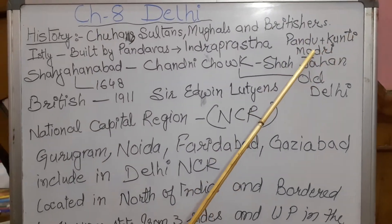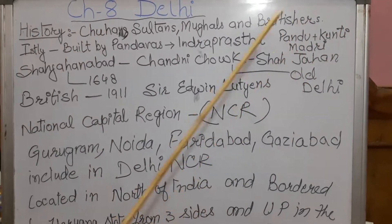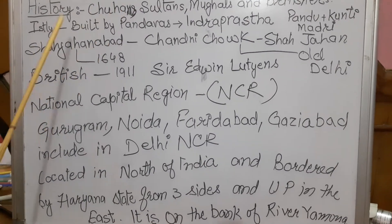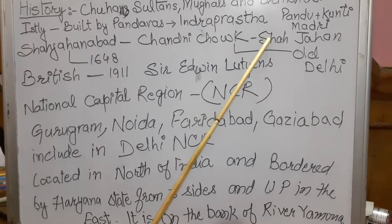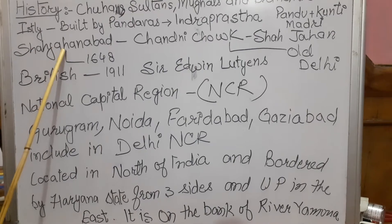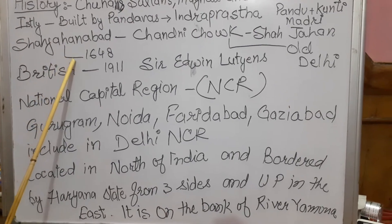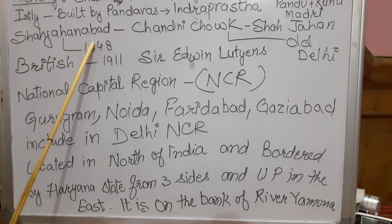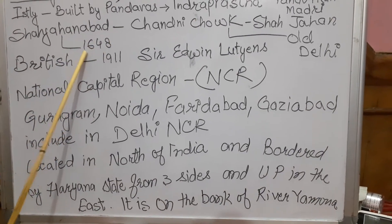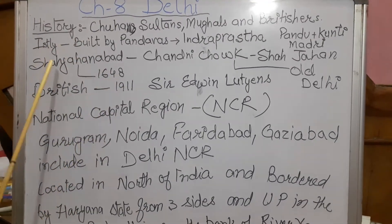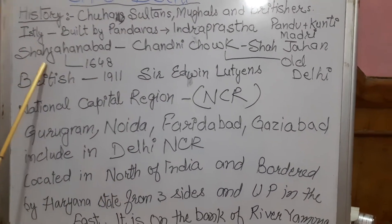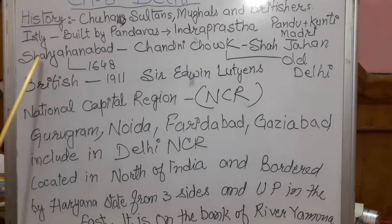After the Pandavas, Mughal Emperor Shah Jahan came here and he made it Delhi. He made Delhi his capital in 1648 and he renamed Indraprastha as Shahjahanabad.